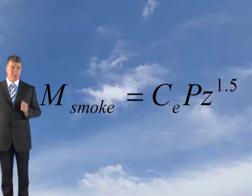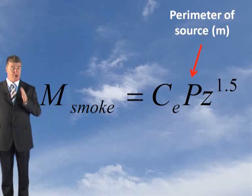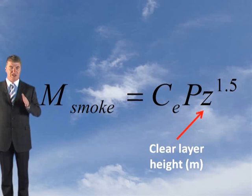The model for the axisymmetric plume is: M_smoke equals CE (the coefficient of entrainment) times P (the perimeter of the source) times Z to the power of 1.5, where Z is the clear layer height. To apply this model you need to determine which coefficient to use. There are three options: 0.19, 0.21, or 0.34.